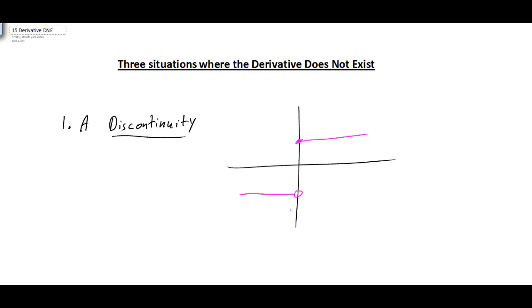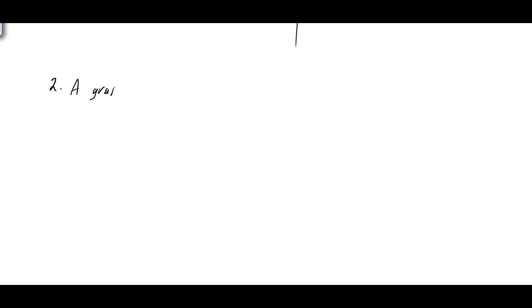Be aware the derivative does not exist at the point here at zero, but your derivative does exist at other places on the graph. So in other words, your derivative is not going to exist at the actual discontinuity.